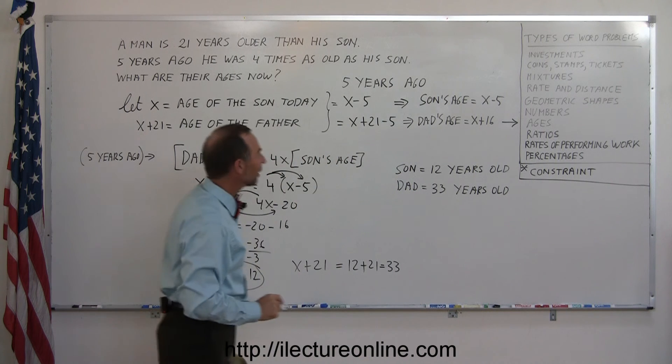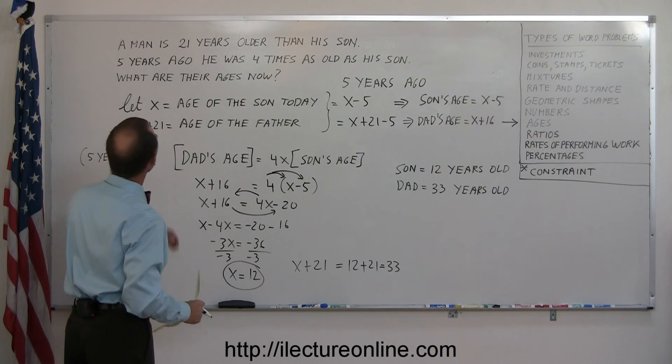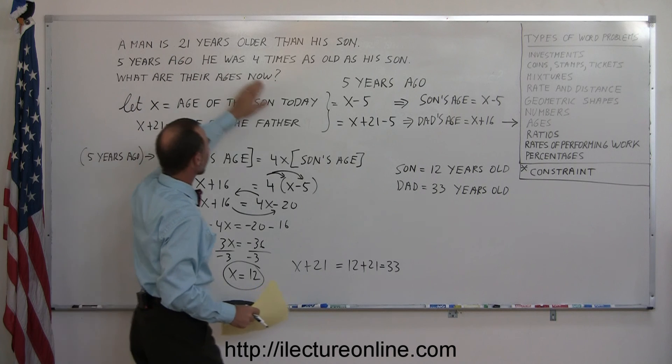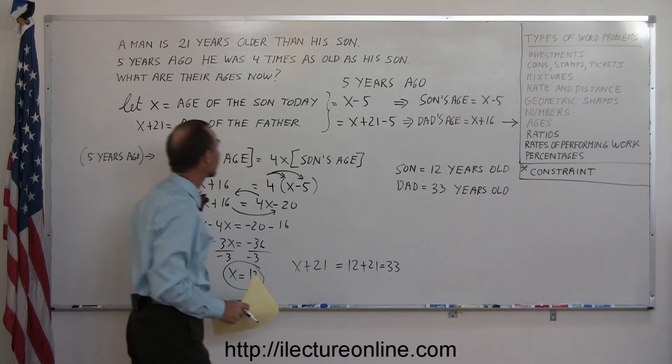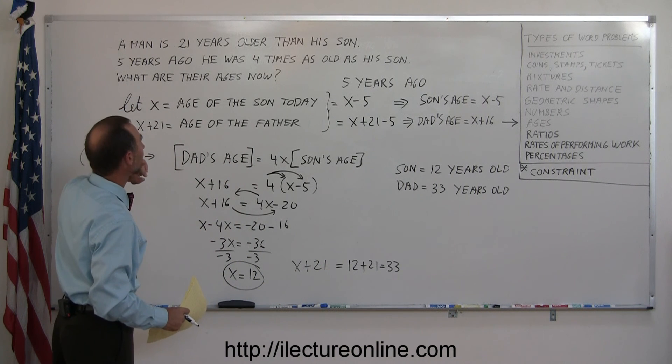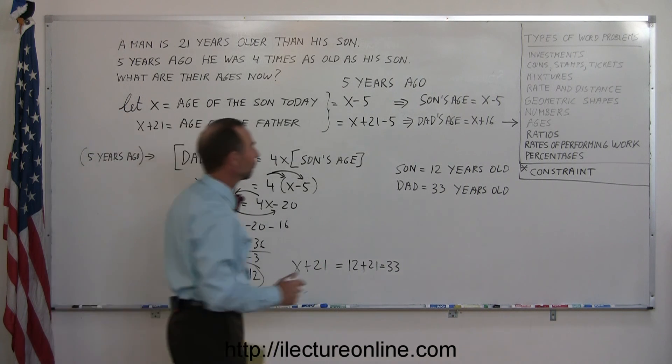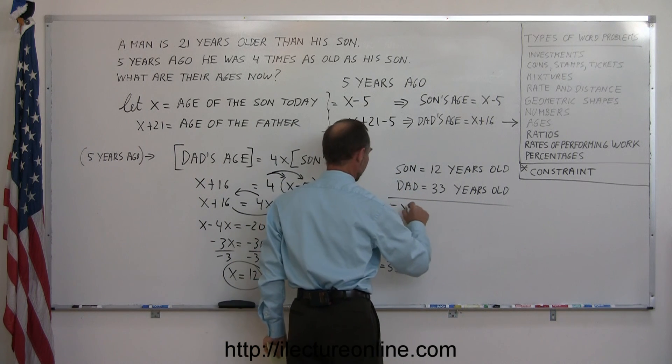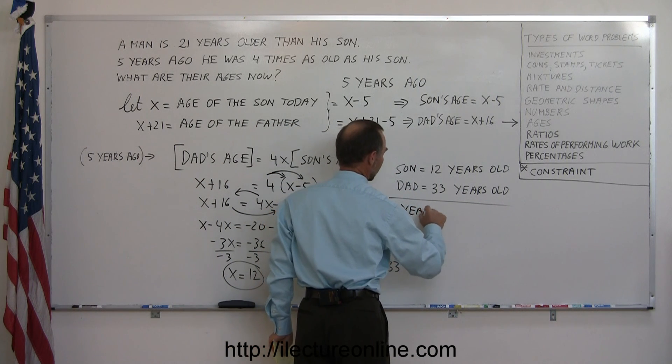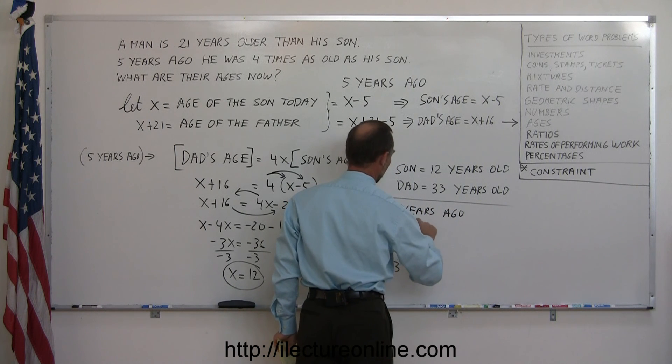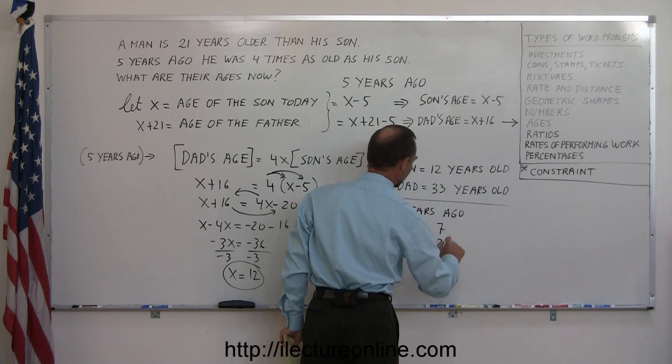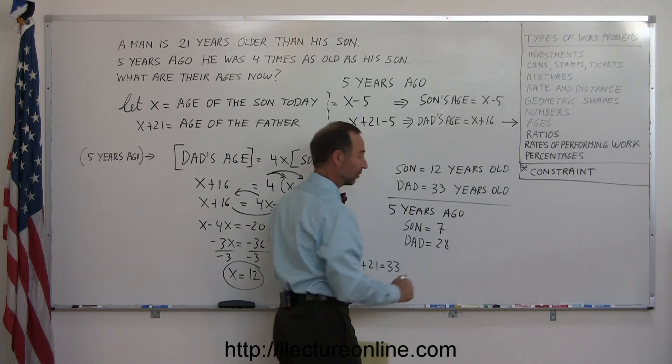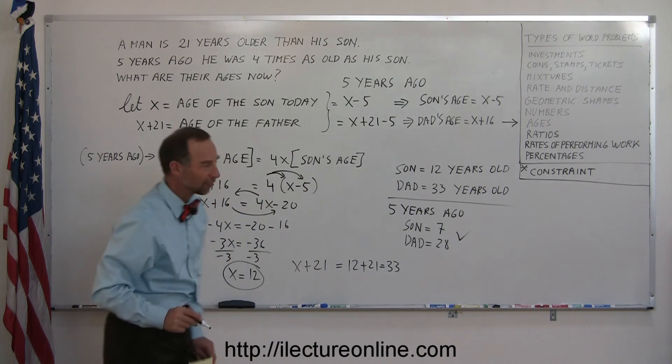And just to make sure that we did everything correctly, let's go back and see that today a man should be 21 years older than his son. So 33 is 21 older than 12. And five years ago, he was four times as old as his son. So five years ago, the son was 12 minus 5, or 7 years old. And the dad was 33 minus 5, which is 28 years old. And sure enough, 28 is 4 times 7. So we checked. And those are the correct answers.